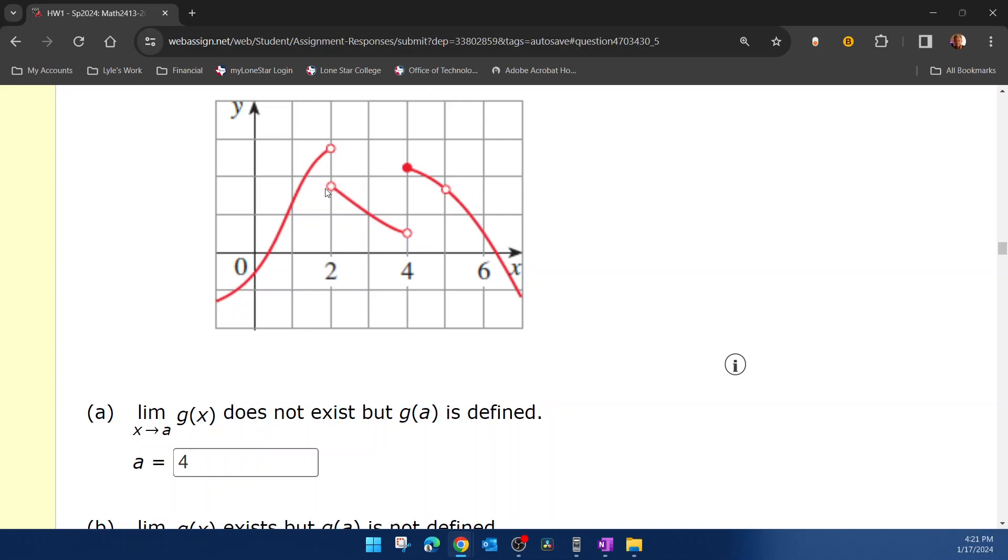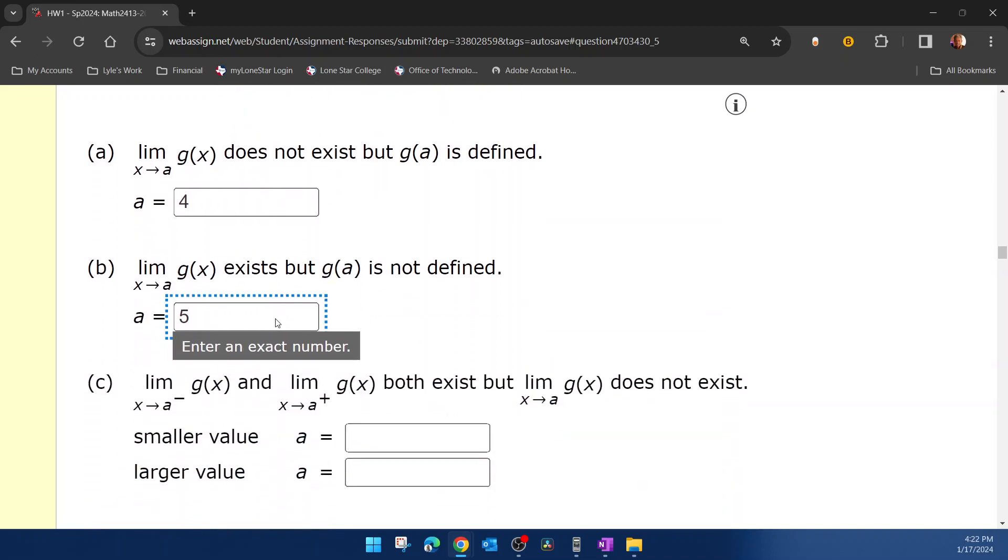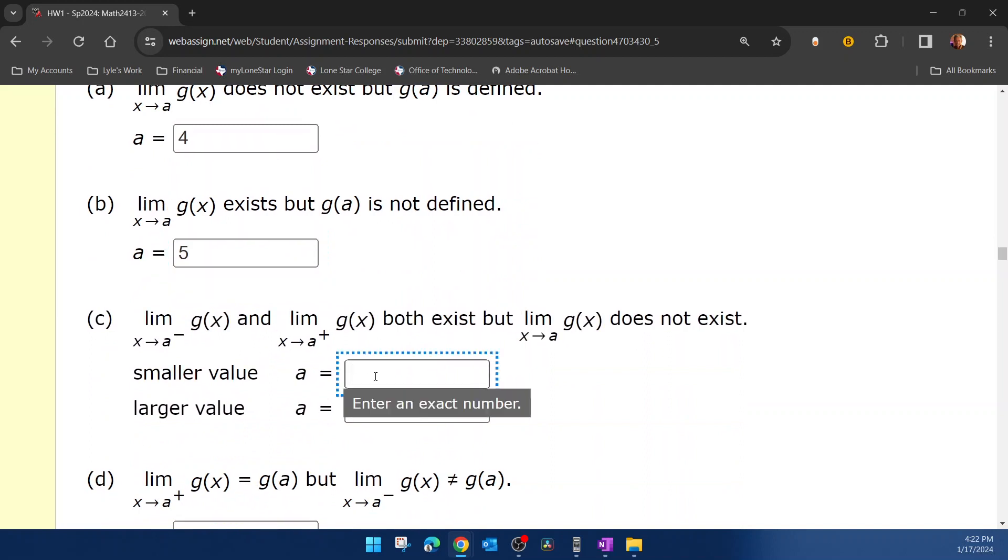So here, if a is 2, we can see that the limit from the left exists because we are approaching a specific height and the limit from the right exists because we're approaching a specific height, but you're not approaching the same height from the left and the right. And that also happens at 4. So the smaller value would be 2 and the bigger value would be 4.